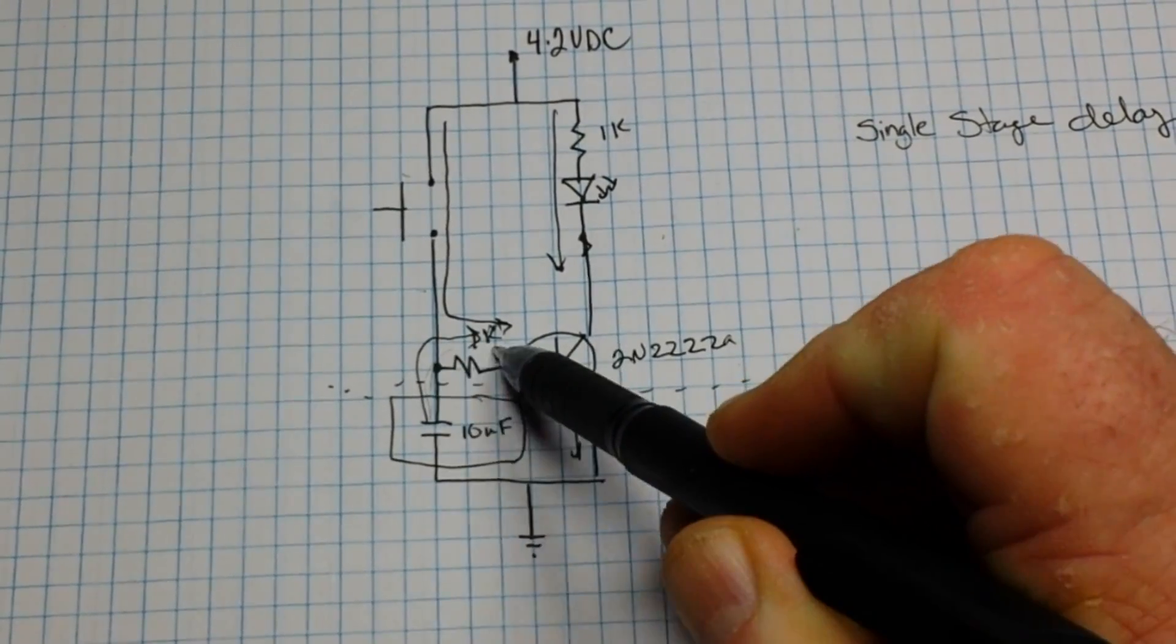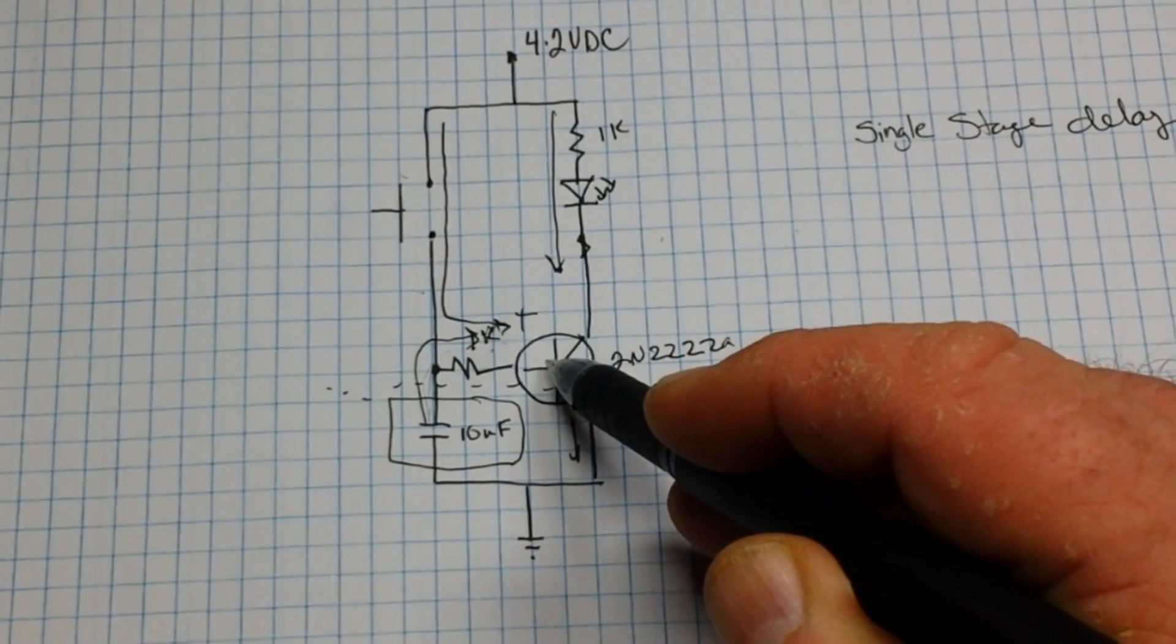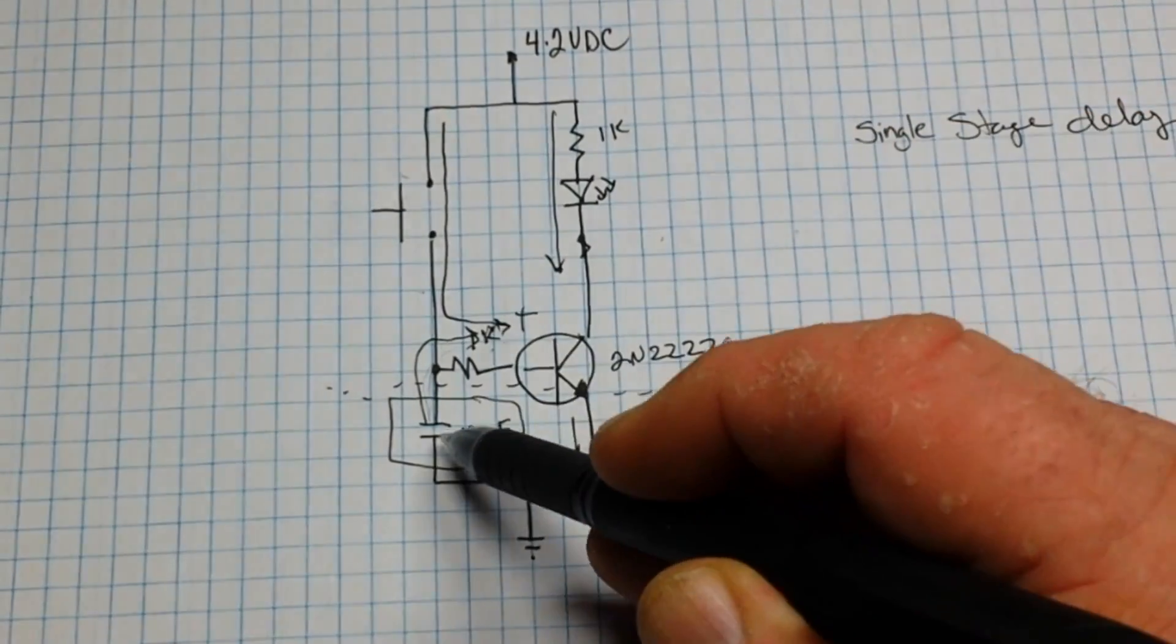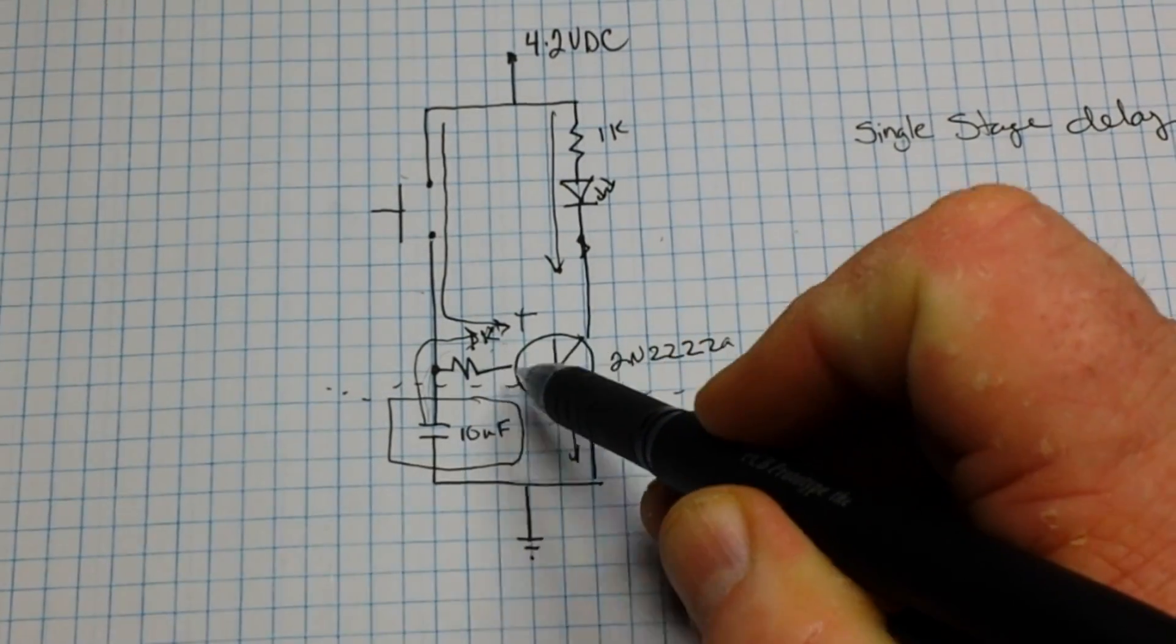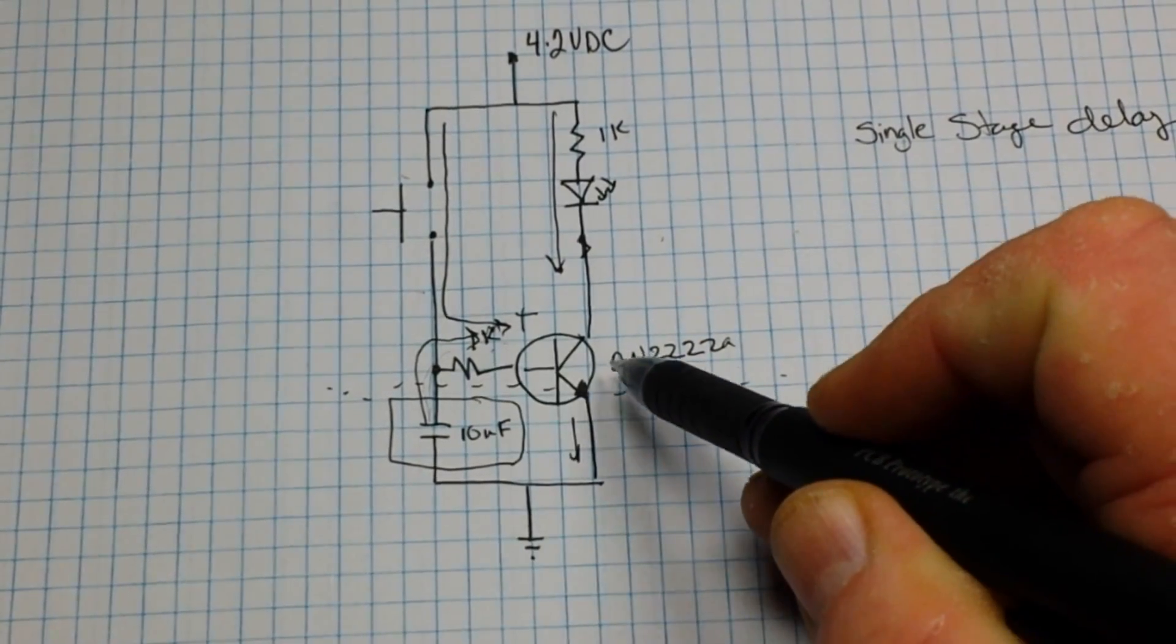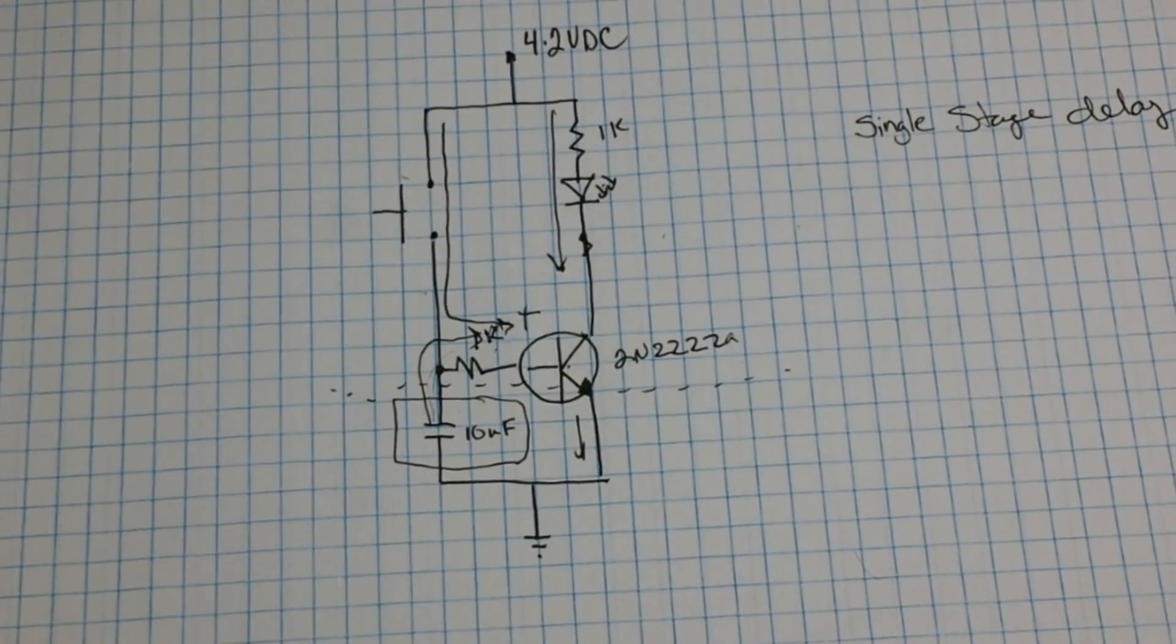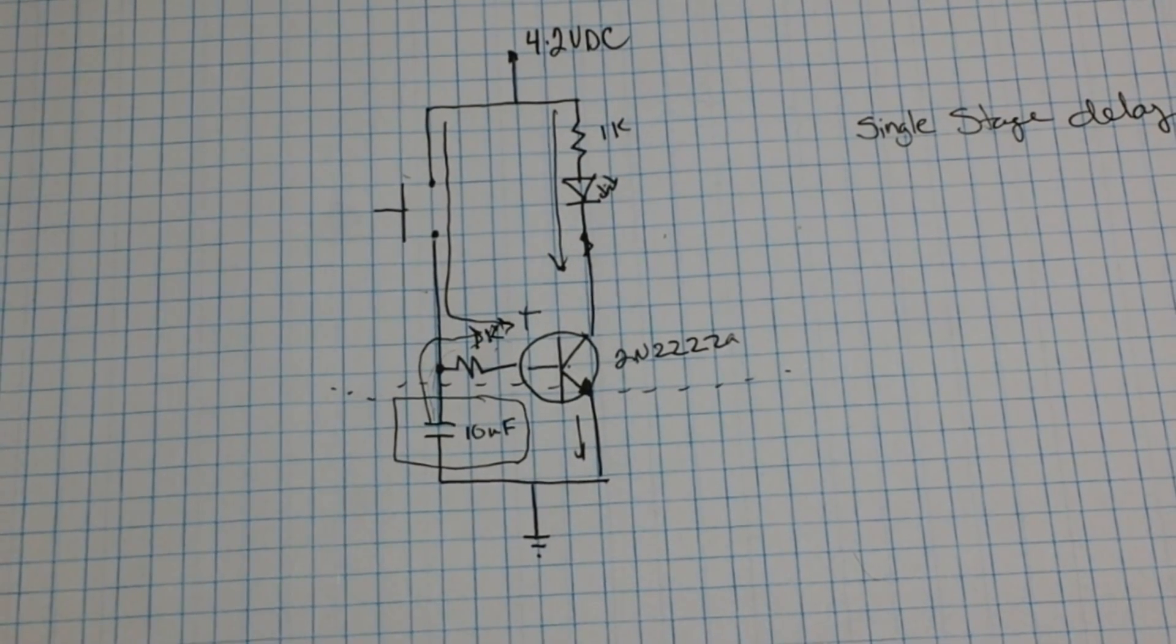When we let go of the button, the charge from that capacitor is going to flow this direction, so we're always getting a positive current flow into the base of our transistor. It's either coming down from the source or up from the capacitor - it doesn't matter. And until that capacitor completely discharges, the transistor will conduct, therefore the LED will light. Simple enough for you? Should be. It's a really easy circuit. Let's take a look at the one I put together on the breadboard.